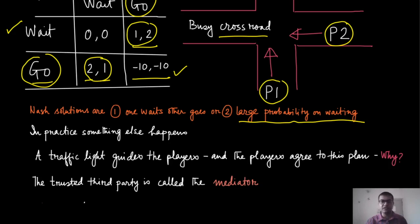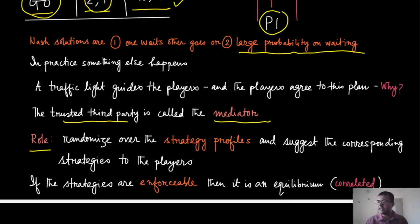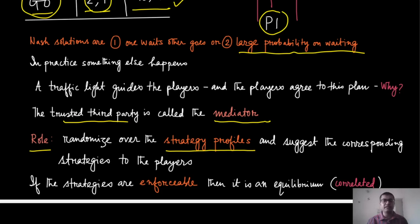This trusted third party — the traffic light or traffic police — is called the mediator. The mediator randomizes over strategy profiles, not over individual strategy sets. In the mixed strategy scenario, each individual had their own randomizing device and made decisions independently. The correlated part means both players can now randomize together. So the mediator randomizes over S1 and S2 jointly, and suggests one action to each of the players.